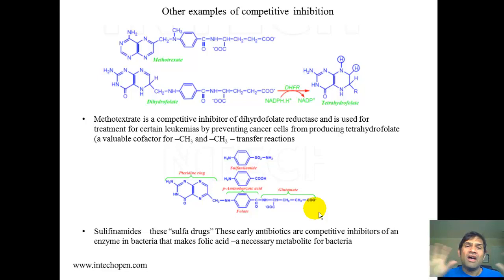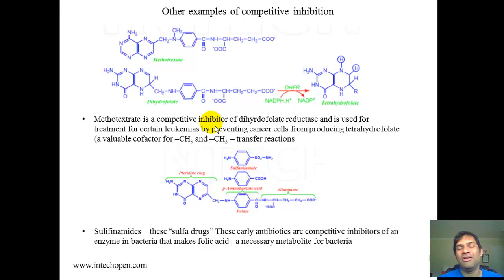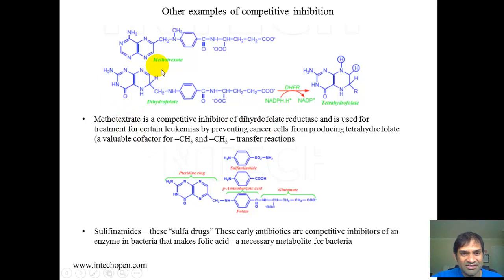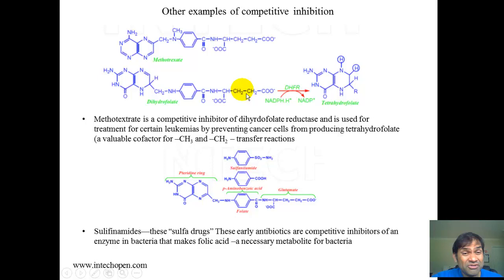Methotrexate is a competitive inhibitor of dihydrofolate reductase, commonly used to treat cancers such as acute myeloid leukemia (AML) and chronic myeloid leukemia (CML). It's a synthetic chemotherapeutic drug that binds to dihydrofolate reductase and shuts it off. Notice the structural similarity between methotrexate and the natural substrate — a common theme among competitive inhibitors.